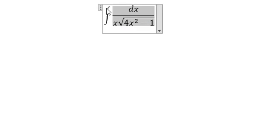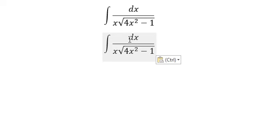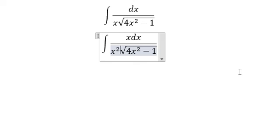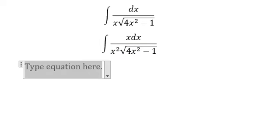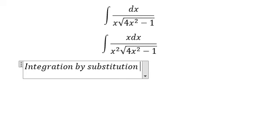First, we multiply the numerator and denominator by x. Next, we use integration by substitution. We set u equal to the square root of 4x² minus 1.